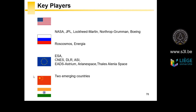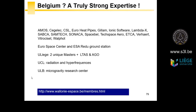Two emerging countries are India — very active around the Moon with their probe Chandrayaan — and China. In 2018, China launched more rockets than the USA and Russia combined. In Belgium, if you want to work in space-related fields after your studies, you have many choices: Amos, Kagelik, CSL (Liège Space Center), EuroHeatpipes, Guillemin Liège, Ionic Software, LambdaX, SABCA, Samtech, Sonaca, Spacebel, Saffran Aerobooster, ETCA, Verhaert, Vitrociset, and many more. Some of these companies are less than 1 km from where we are. Liège is a pole for space.